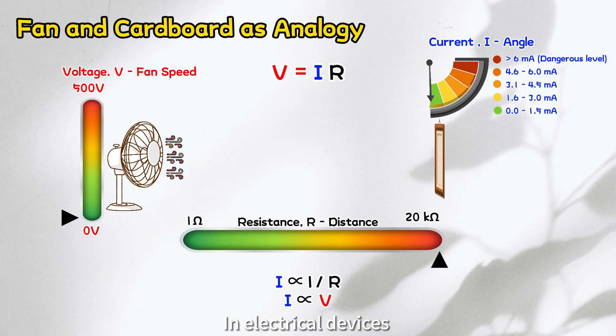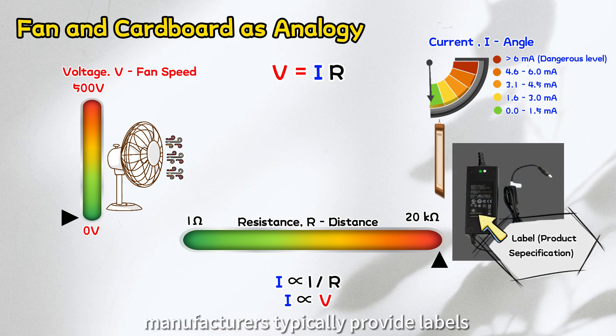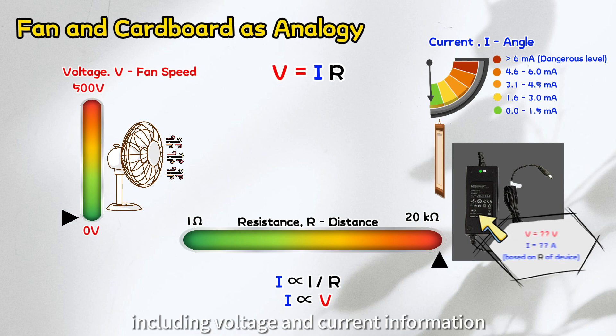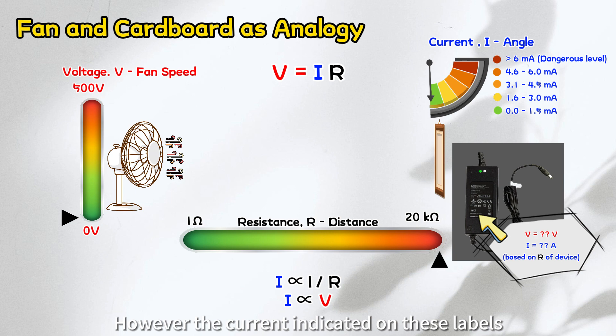In electrical devices, manufacturers typically provide labels or technical data sheets detailing product specifications, including voltage and current information. However, the current indicated on these labels is based on the resistance of the device itself, rather than the resistance of the human body.